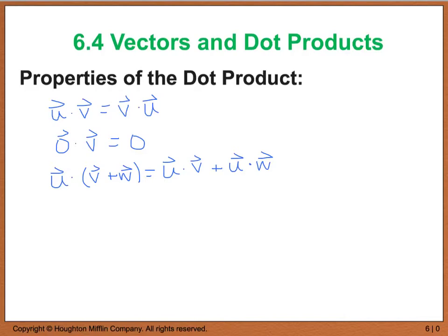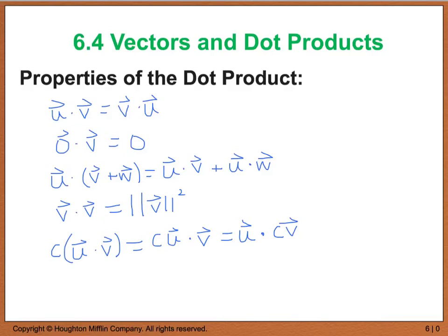Then we also have, if we dot a vector with itself, we're going to end up with the magnitude of that vector squared. And the last property says that if we have some constant c, which is a scalar, and we multiply that by u dot v, we're going to end up with that scalar of c times vector u dot v, and that's going to give us the same thing as vector u dot the scalar times vector v. Over the course of the next few examples, we're going to see how some of these properties work.